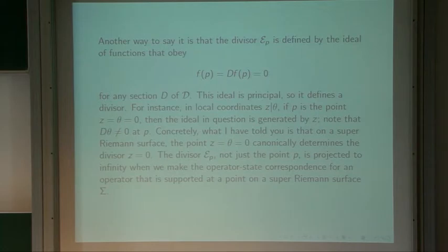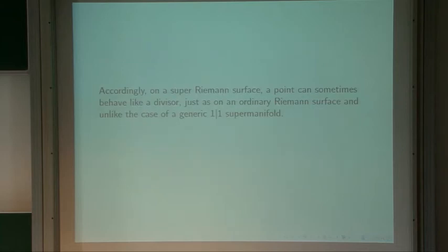It's this divisor, not the point P, that is projected to infinity when we make the operator-state correspondence for an operator supported at a point on a super-Riemann surface. So on a super-Riemann surface, a point can sometimes behave like a divisor, just as on an ordinary Riemann surface — unlike the case of a generic 1|1 supermanifold.